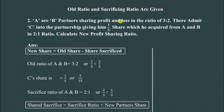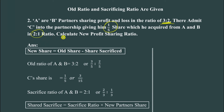This is the second type of problem. A and B are partners sharing profit and loss in the ratio of 3 to 2. They admit C for a 1/5th share. So A, B, and C, with C receiving 1/5th share.